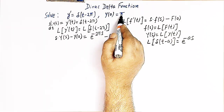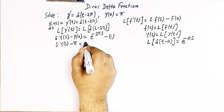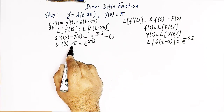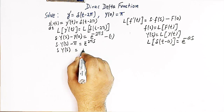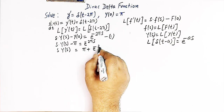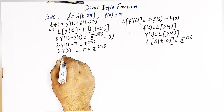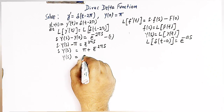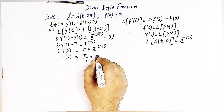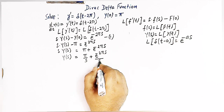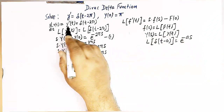Now y(0) is given as π. So we write s·Y(s) − π = e^{−2πs}. Taking −π to the right side, we get s·Y(s) = π + e^{−2πs}. Dividing both terms by s, we have Y(s) = π/s + e^{−2πs}/s. Note that Y(s) is the Laplace transform of y(t).